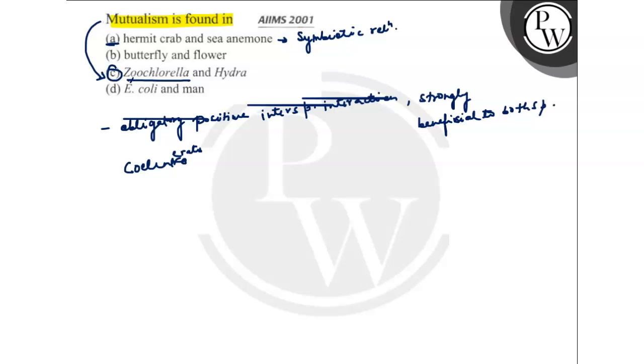So we got our correct option. Our correct option is option number C, because mutualism is an obligatory, positive, inter-specific interaction where both species get equal benefit. Option C is the correct option.